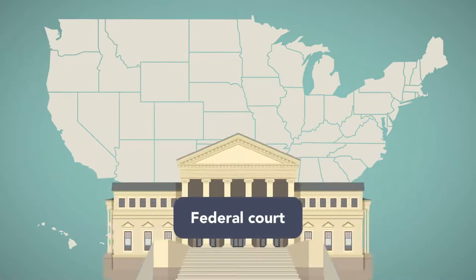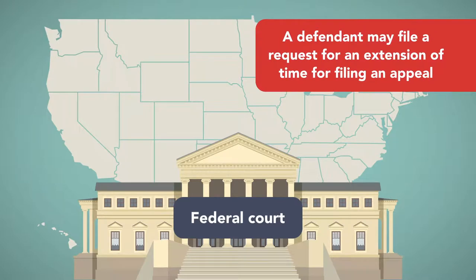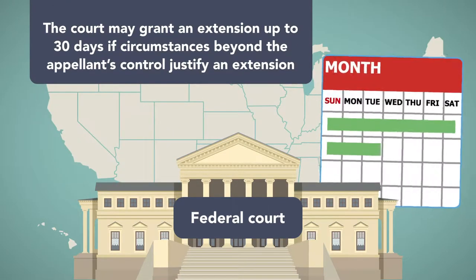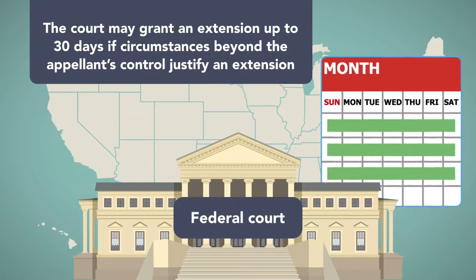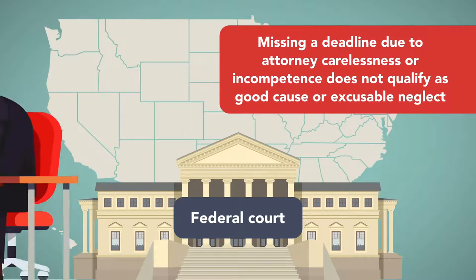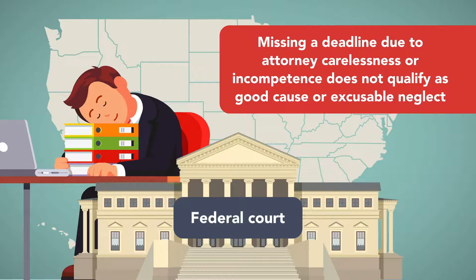In federal court, a defendant may file a request for an extension of time for filing an appeal, either before or after the filing deadline has expired. The court may grant an extension of up to 30 days if circumstances beyond the appellant's control justify an extension. However, missing a deadline due to attorney carelessness or incompetence does not qualify as good cause or excusable neglect.